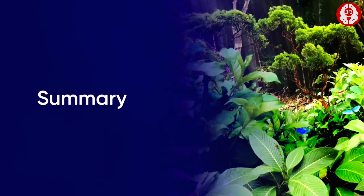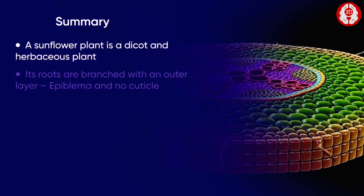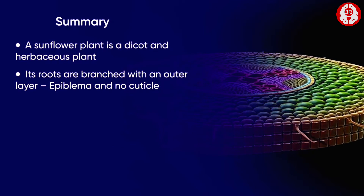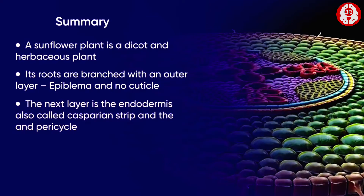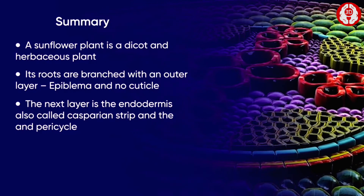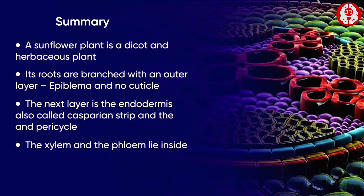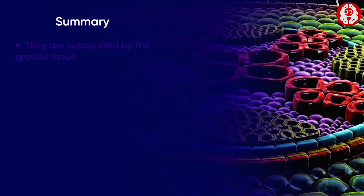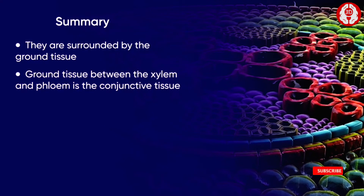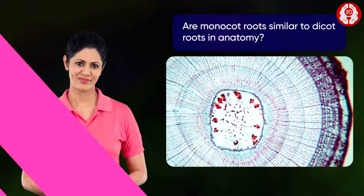To summarise, a sunflower plant is a dicot and herbaceous plant. Its roots are branched with an outer layer, epiblemma, and no cuticle. The next layer is the endodermis and the pericycle. The xylem and phloem lie inside, surrounded by the ground tissue. The ground tissue between the xylem and phloem is the conjunctive tissue.